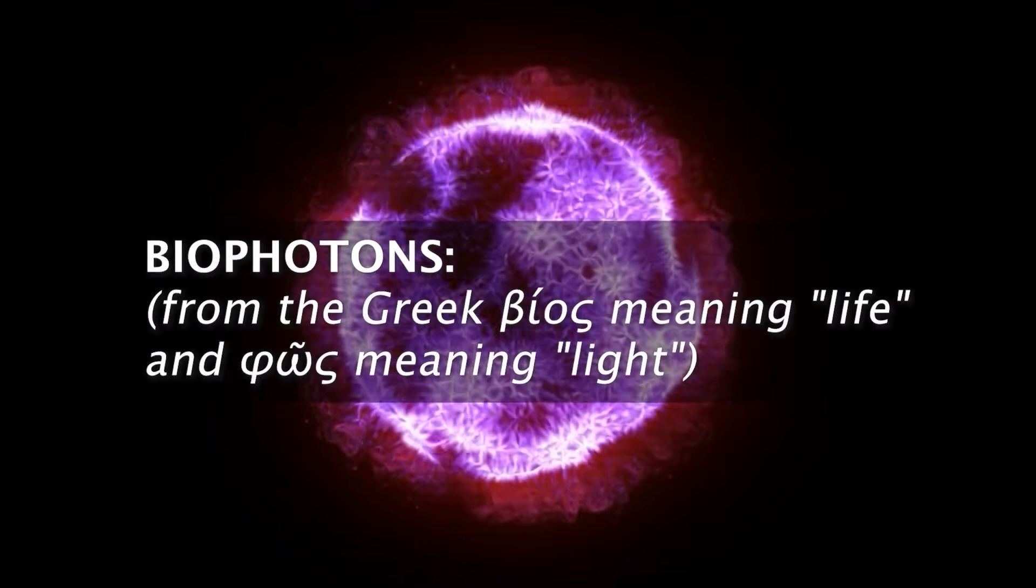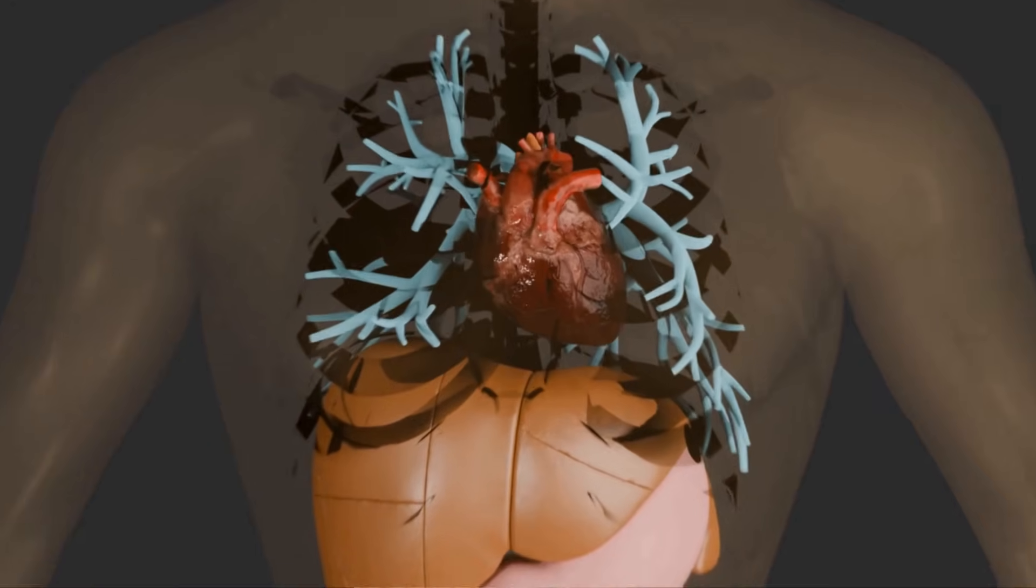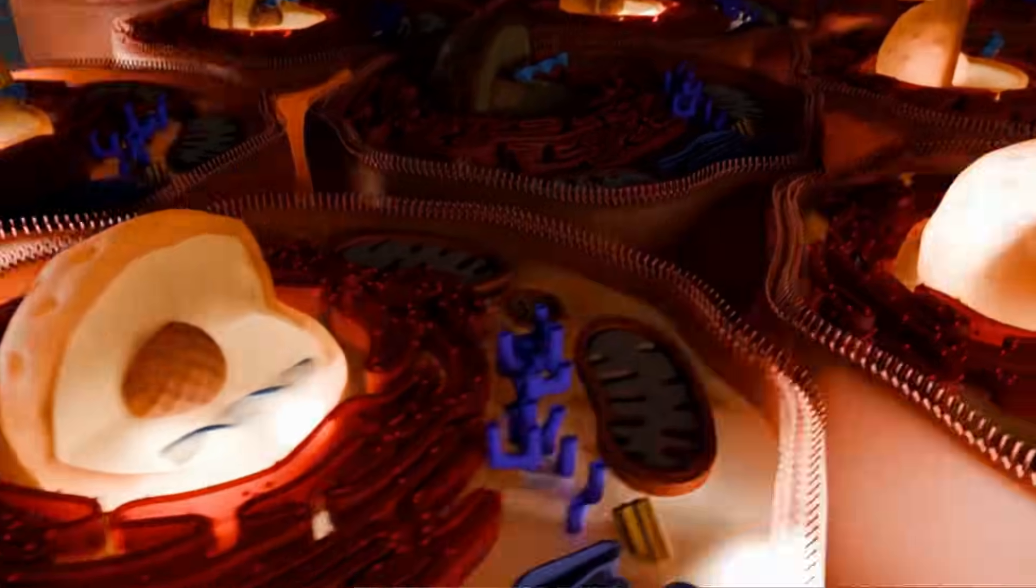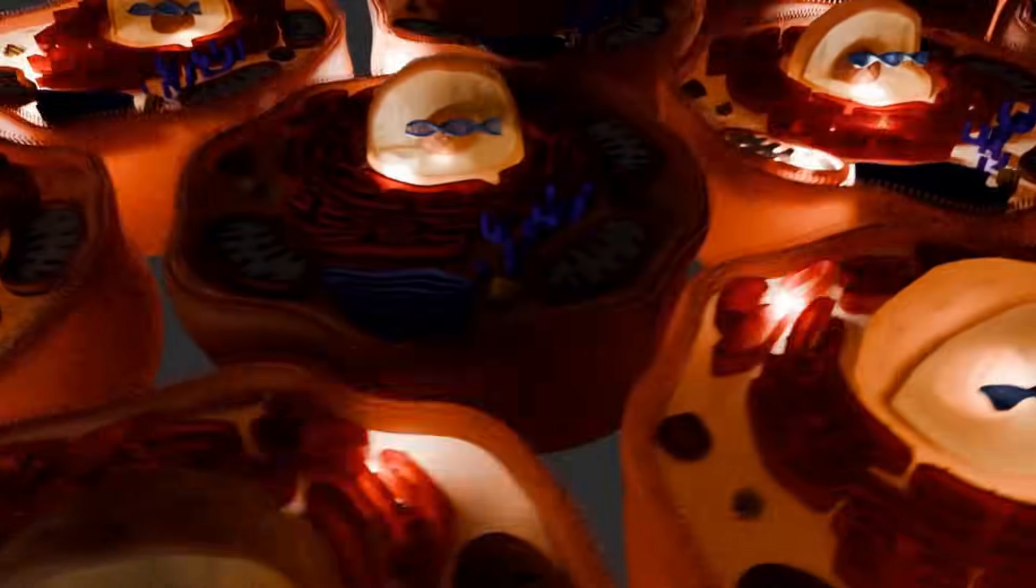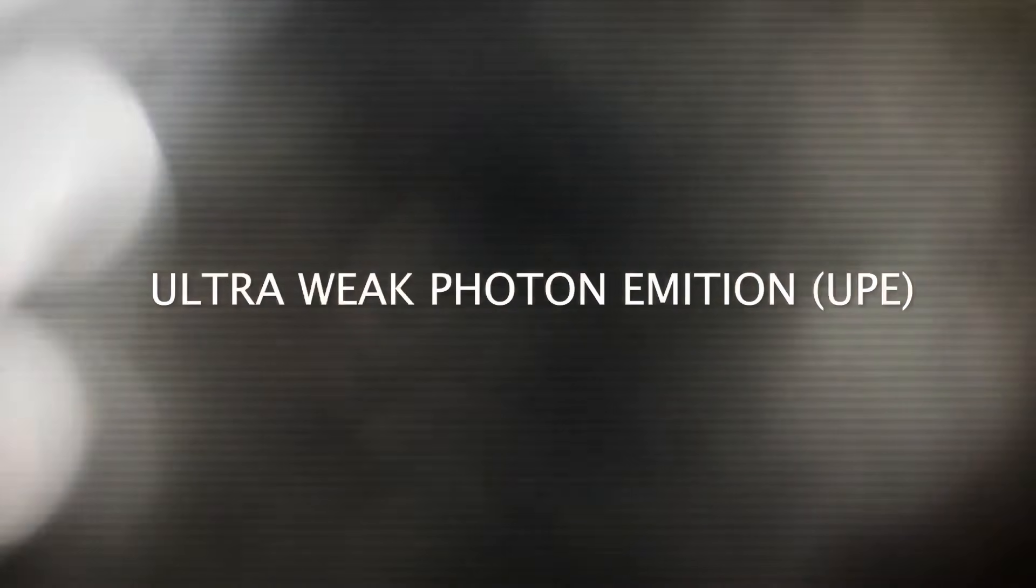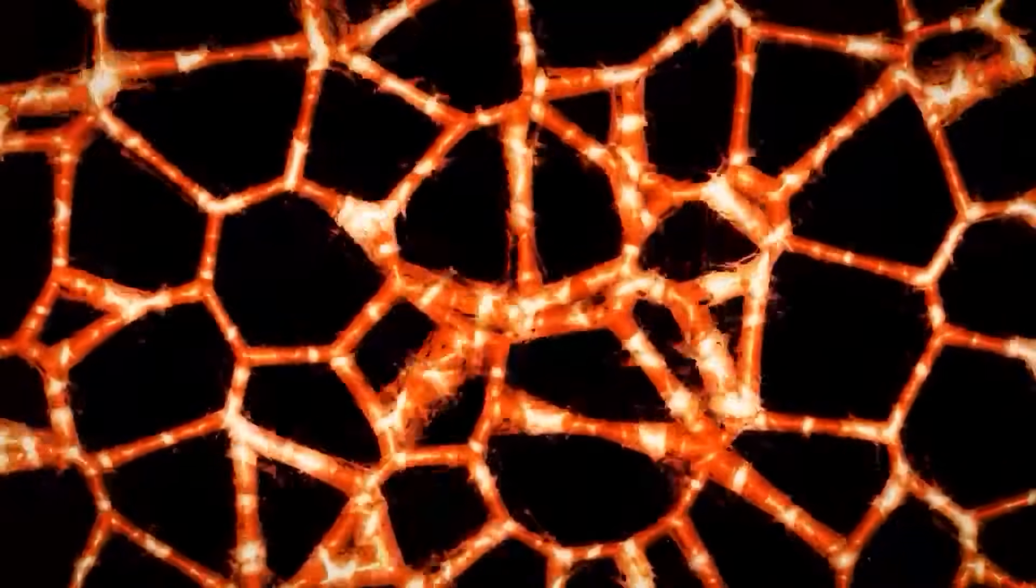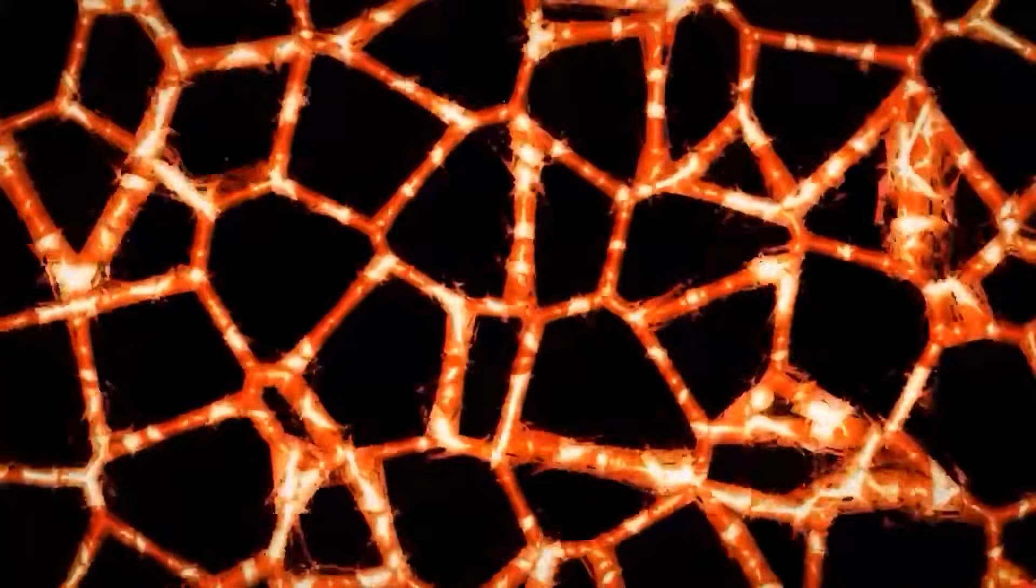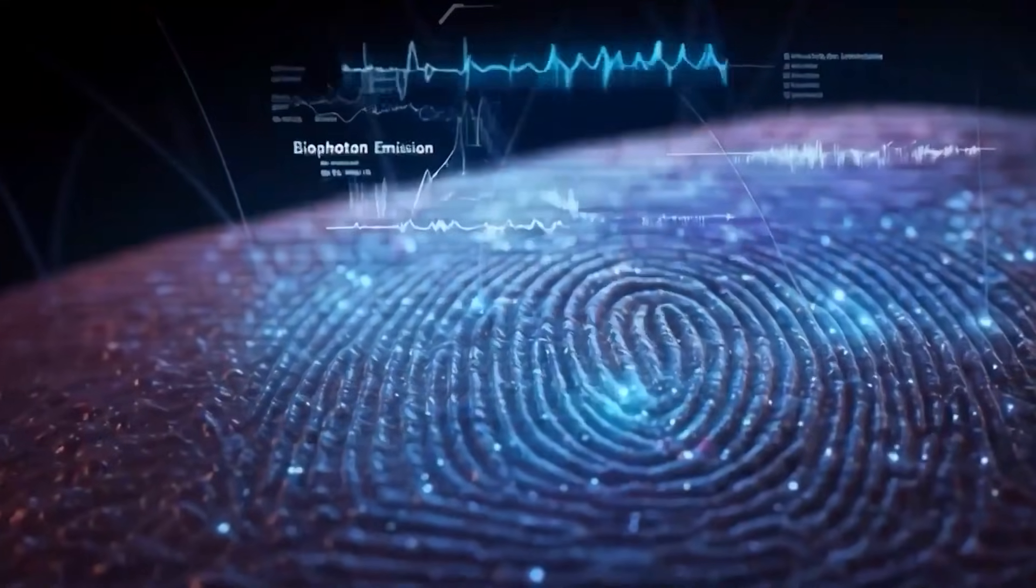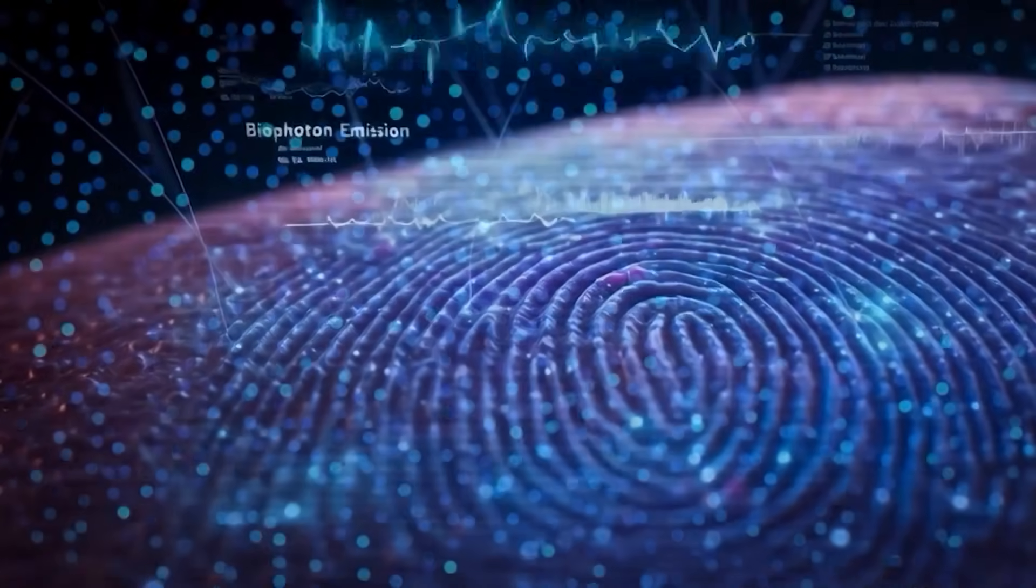You are emitting light right now, not metaphorically, literally. It's called ultra-weak photon emission (UPE) - tiny biological light emissions, like whispers of light coming from every cell in your body. Weird, right? But this isn't just a biological party trick.